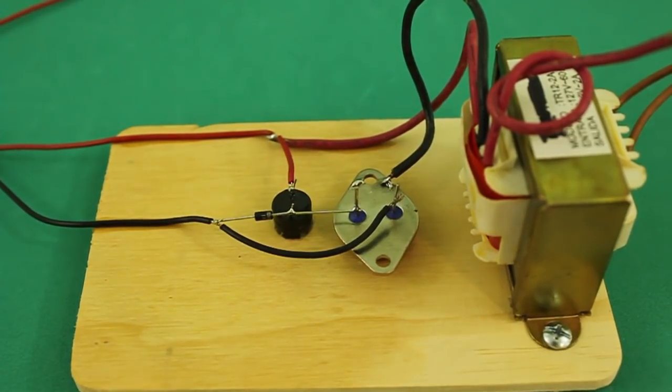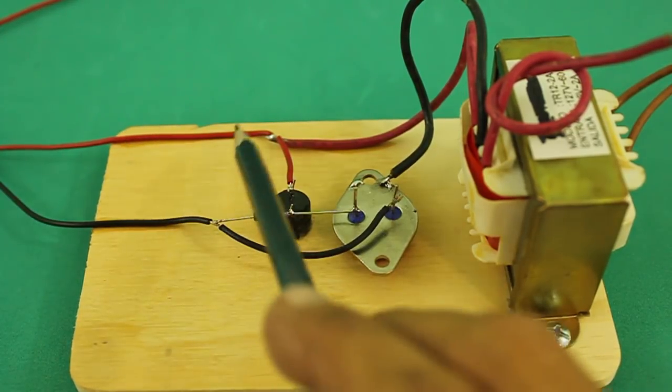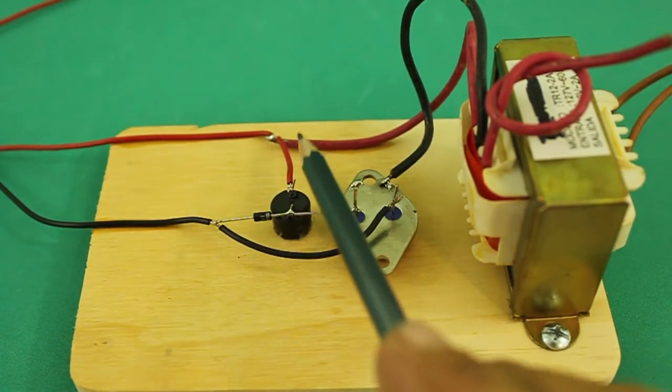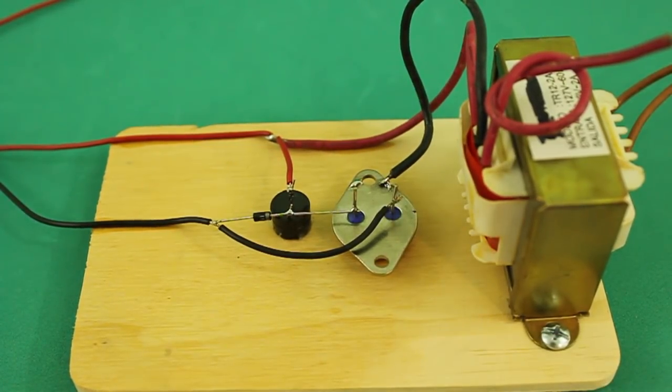Let's check the connections. The positive from the power supply or battery goes to the positive of the buzzer and to one side of the secondary of the transformer which, in our case, we are using as primary.